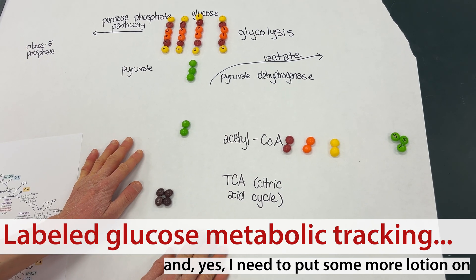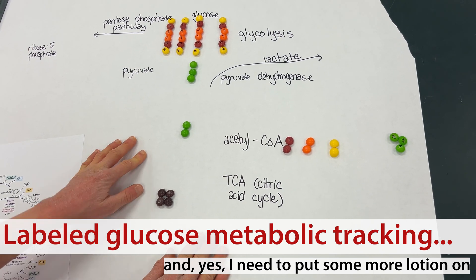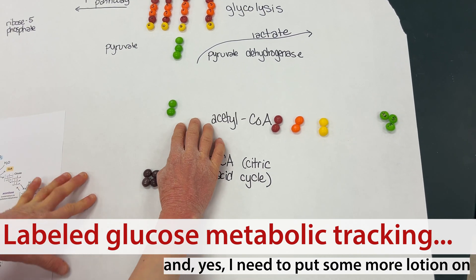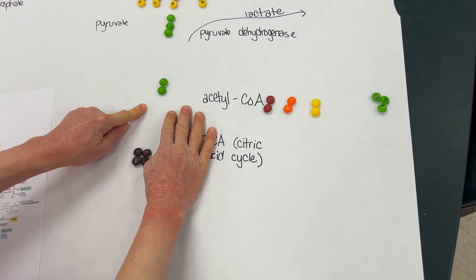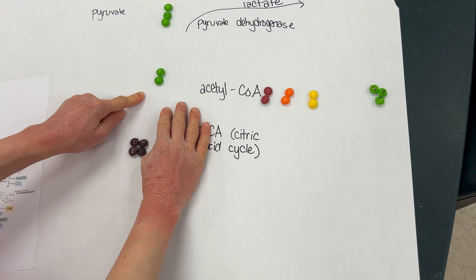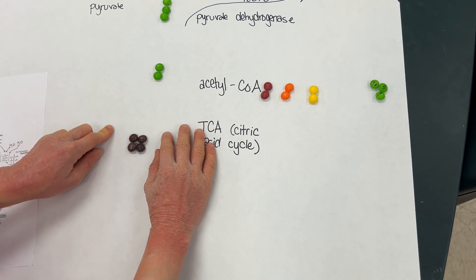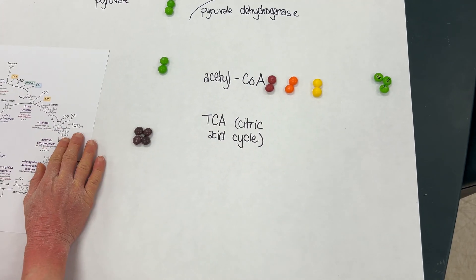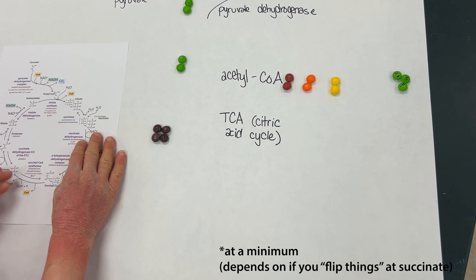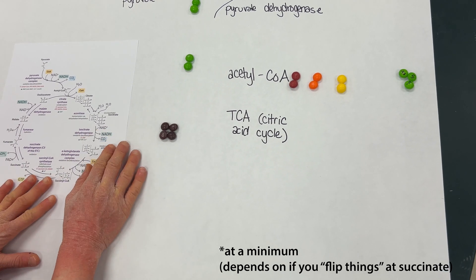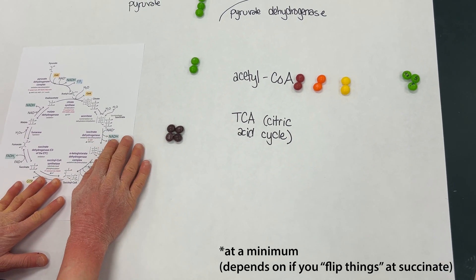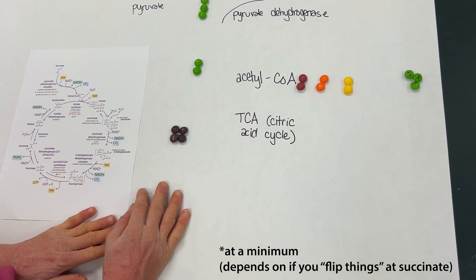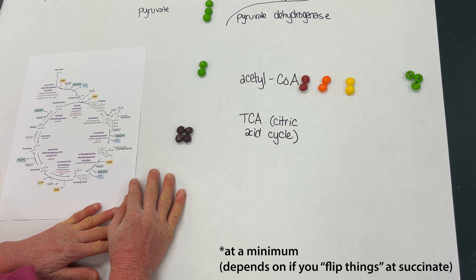When acetyl-CoA enters the tricarboxylic acid cycle, the carbons from acetyl-CoA are not going to get released as CO2 during the first turn of the cycle. It's going to take the second and the third cycles in order to actually release that as CO2.